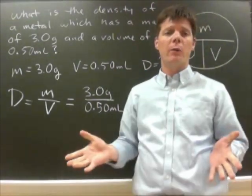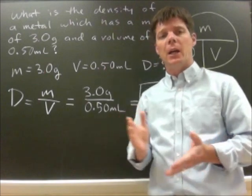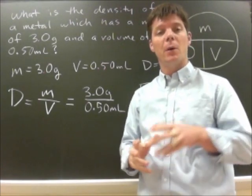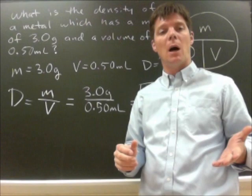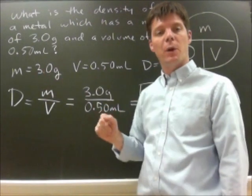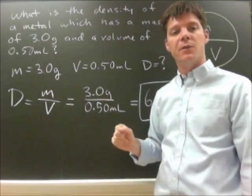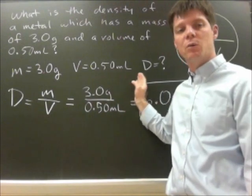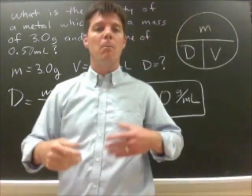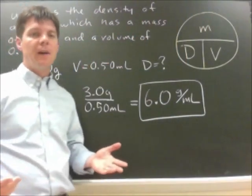Let's just do a quick review of the five-step method. In our first step we identified the variables, both known and unknown, from the problem. They were: the mass was 3.0 grams, the volume was 0.50 milliliters, the density is what we were trying to find.